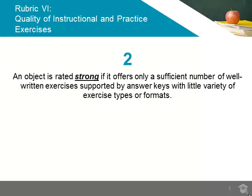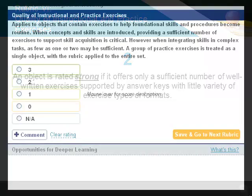An object is strong if it offers only a sufficient number of well-written exercises supported by an answer key that contain little variety in exercise type or format, and should be given a 2 rating.